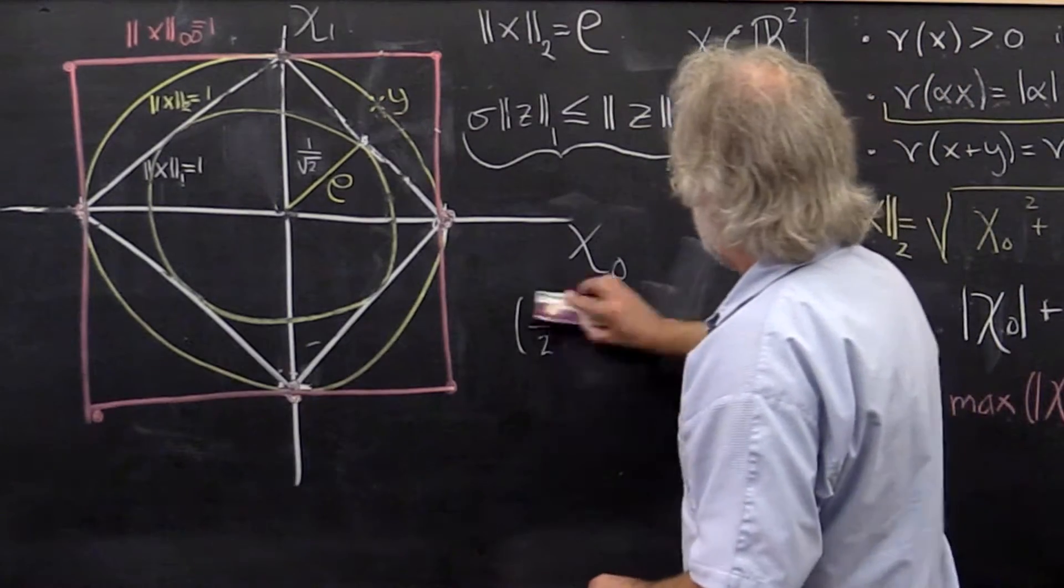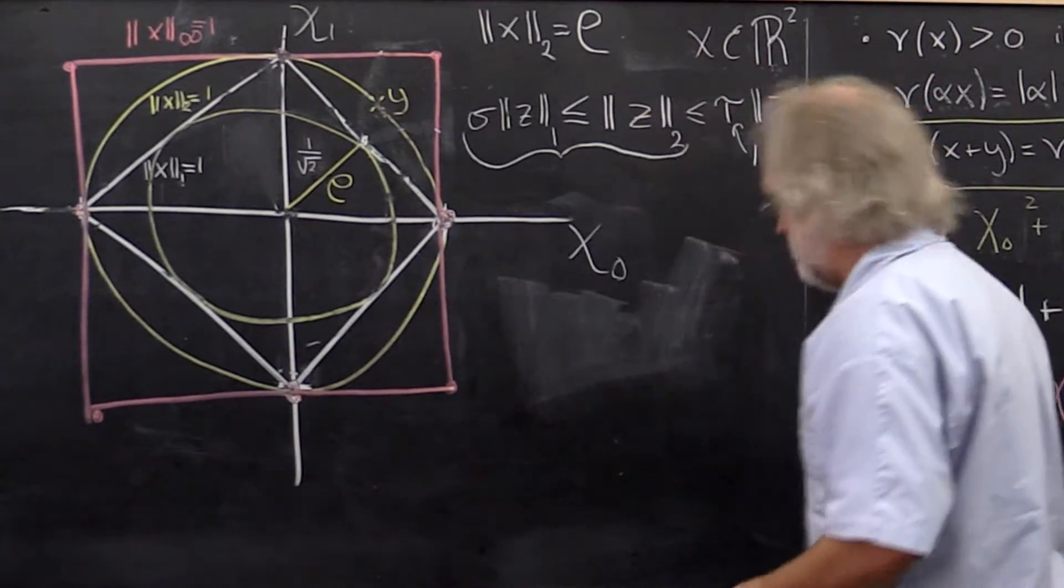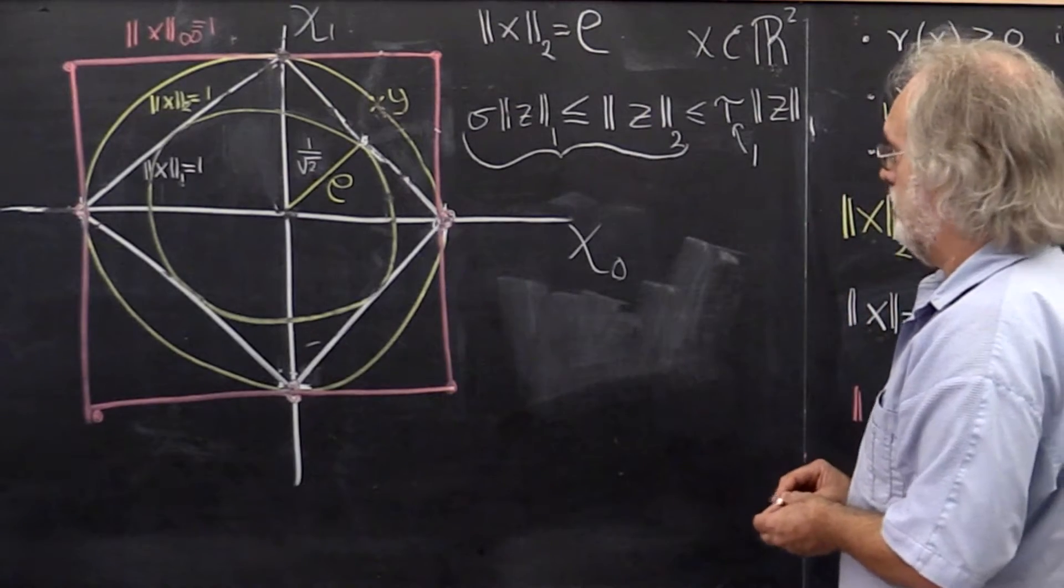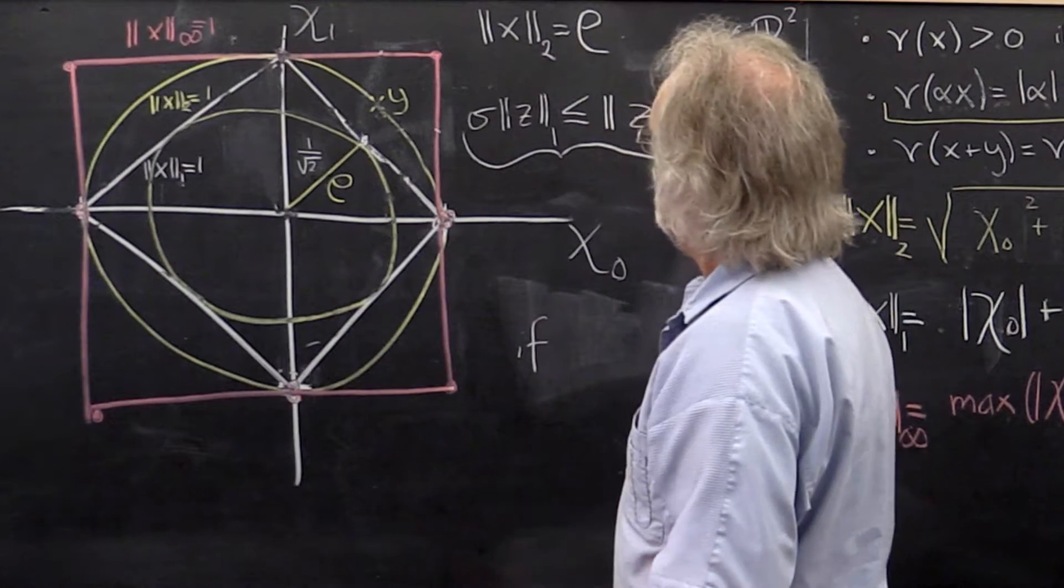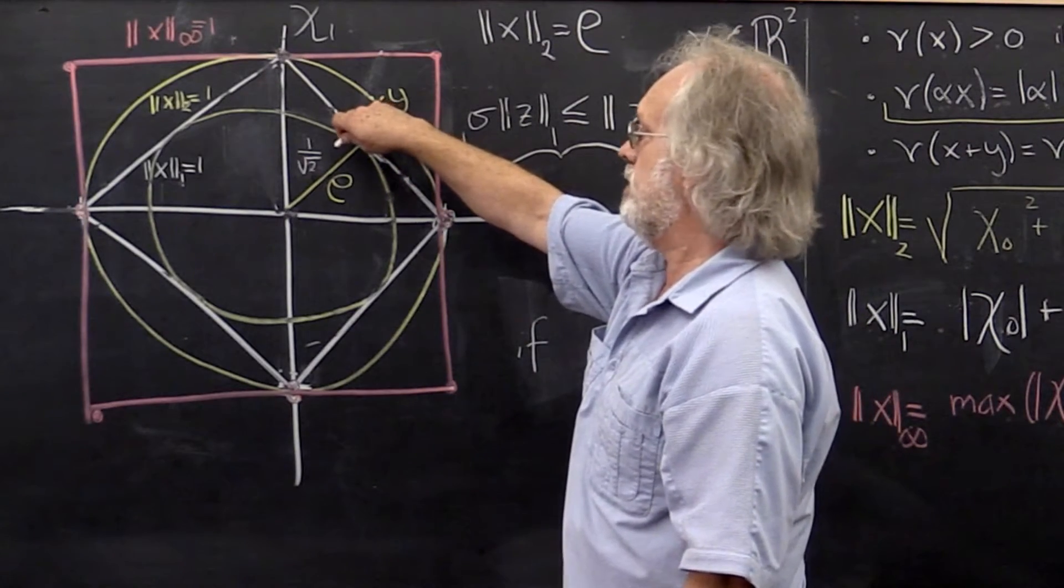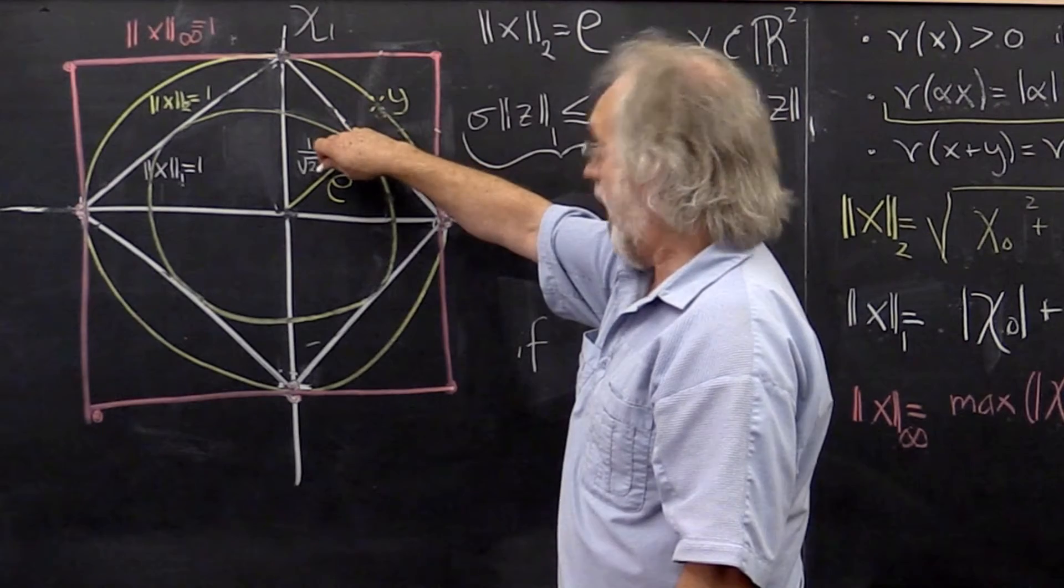Let's erase this now. Now let's do the exact same argument as we did before. What did we say there? We said if y is on the unit ball for the 2-norm, then...